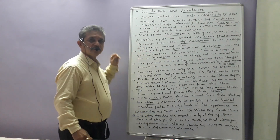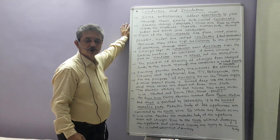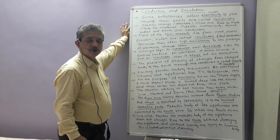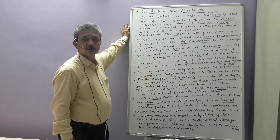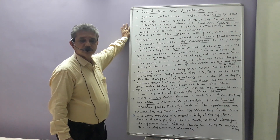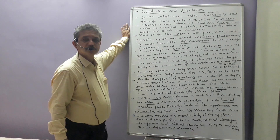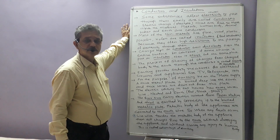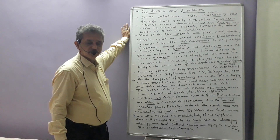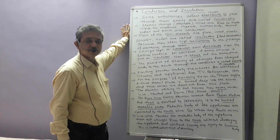Last time we discussed about the Gold-Leaf Electroscope. Today we are going to discuss about conductors and insulators. In the periodic table, there are different kinds of elements. The elements in the first three groups are called conductors, and the elements in the last three groups are called non-conductors or insulators.